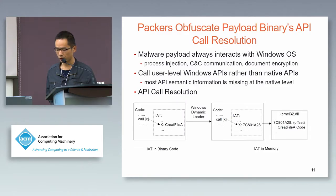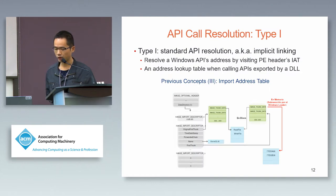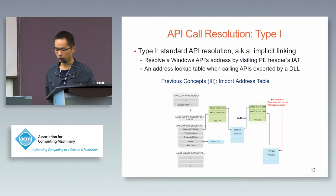Malware behavior such as process injection and C&C communication relies on Windows APIs. The malware often uses user-level Windows APIs rather than native APIs, because most API semantic information is missing at the native level. On Windows OS, there are two ways to call user-level APIs. Type 1 is standard API resolution — it resolves a Windows API address by visiting the module's Import Address Table (IAT), which is an address lookup table supported by a DLL.